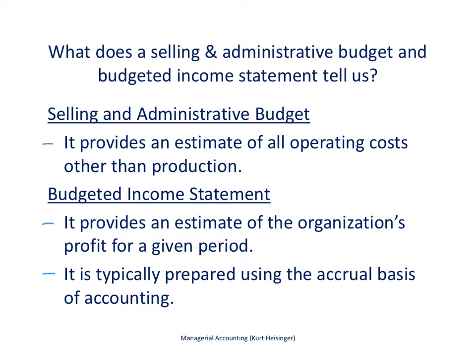This is Kurt Heisinger, accounting professor at Sierra College and author of Managerial Accounting. This video describes how to put together two components of the operating budget for a manufacturing company: the selling and administrative budget and the budgeted income statement.